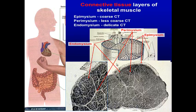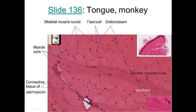Looking at a piece of muscle: on the outside is the epimysium, the outermost connective tissue. Divisions inside are the perimysium, which goes through the muscle. Around individual muscle cells is the endomysium. The epimysium and perimysium are coarse connective tissue; the endomysium is more delicate connective tissue around individual cells. Capillaries are found in the endomysium, supplying the individual muscle cells.